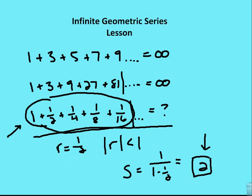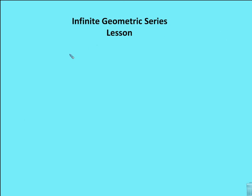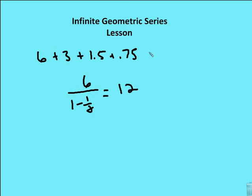Let's take one more example. Let's say that we have a value of 6, 3, 1.5, 0.75. So a sub 1 is going to be 6. My common ratio is 1 half. And I end up with 6 over 1 half, which is equal to 12.